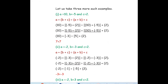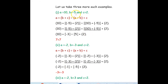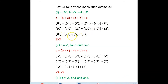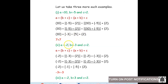Now consider a third example: a = 10, b = negative 5, c = 2. Substituting into the associative formula: left side — negative 5 plus 2 equals negative 3, so 10 + negative 3 = 7. Right side — 10 plus negative 5 equals 5, so 5 + 2 = 7. Both sides are equal.